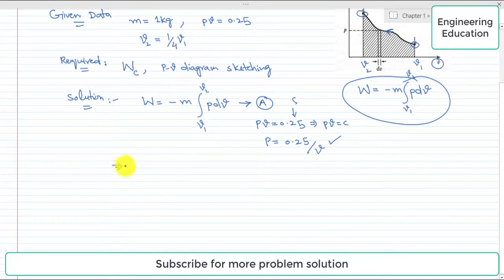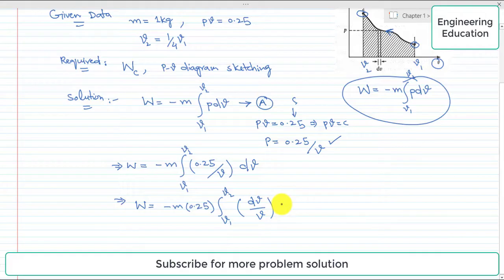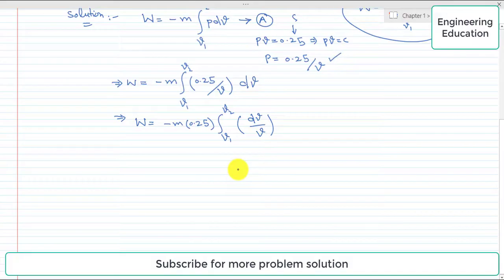Putting the expression P equals 0.25 by V into the integral, we can write that W equals minus m, from V1 to V2, 0.25 by V into dV. Since 0.25 is constant, we can write W equals minus m into 0.25, limits V1 to V2, dV by V. If we apply the integration and put the value of m equals 1 kilogram given in the problem.